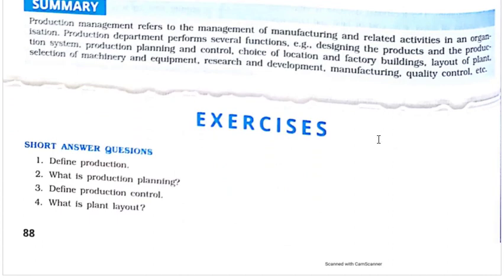To summarize: production management refers to the management of manufacturing and related activities in the organization. The production department performs several functions — designing of the product and the production system, production planning and control, choice of location and factory building, layout of plant, selection of machineries and equipment, research and development, manufacturing, and quality control.